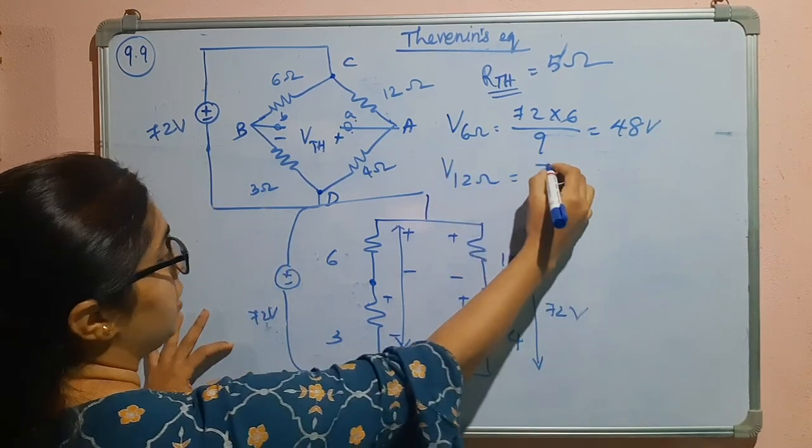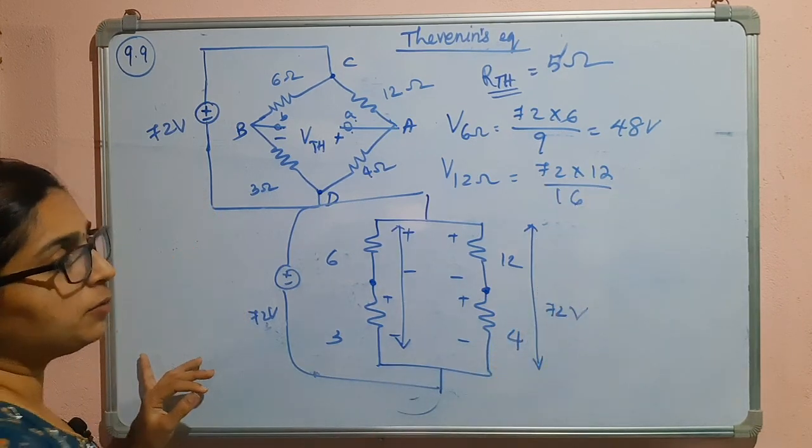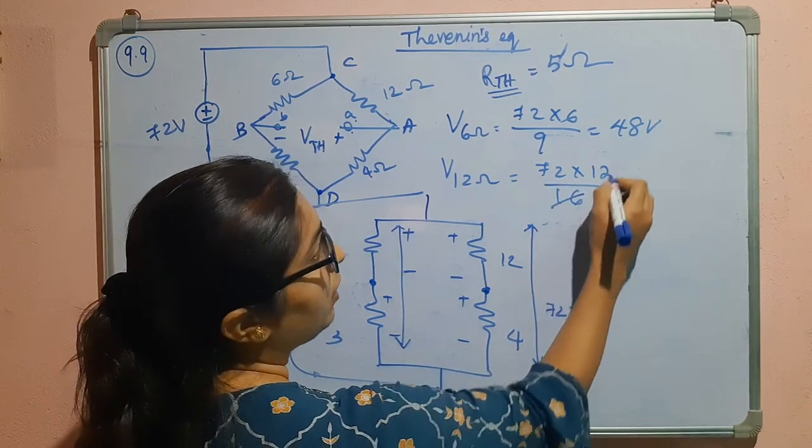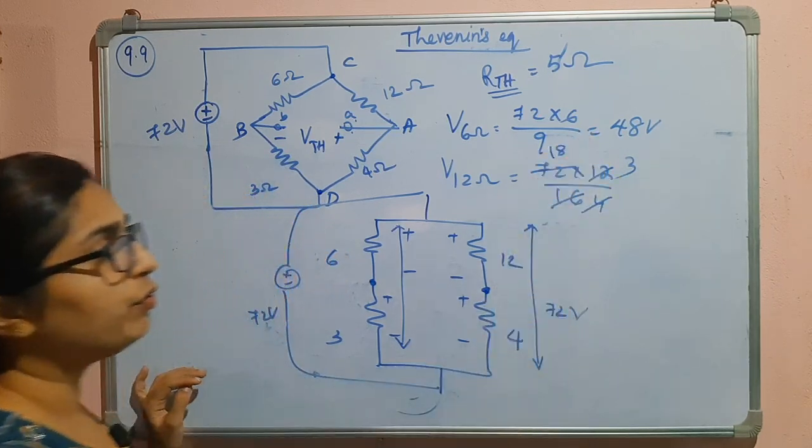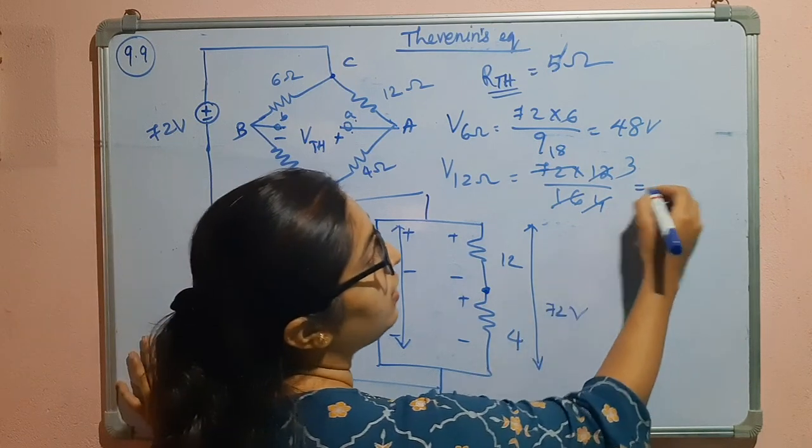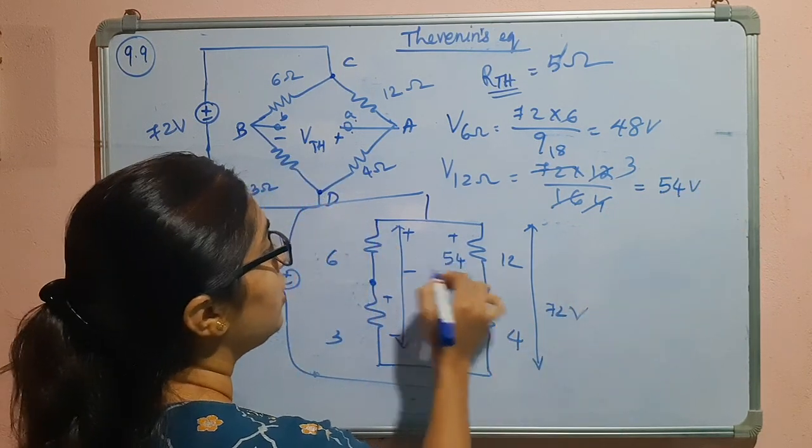Voltage across 12 ohm is 72 into 12 divided by 12 plus 4, that is 16. So here we can write 4, 3 is 4, and here we have 18. 4, 18. So 18, 3 is, we have 54 volts. So this is 54. This is 48.